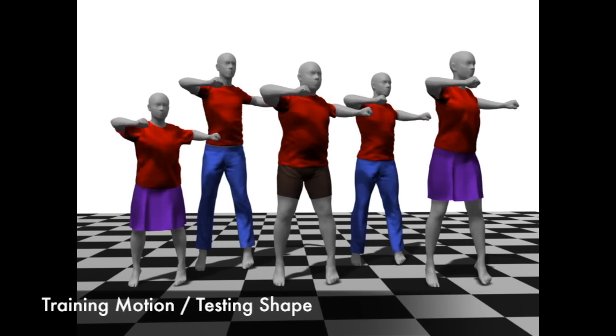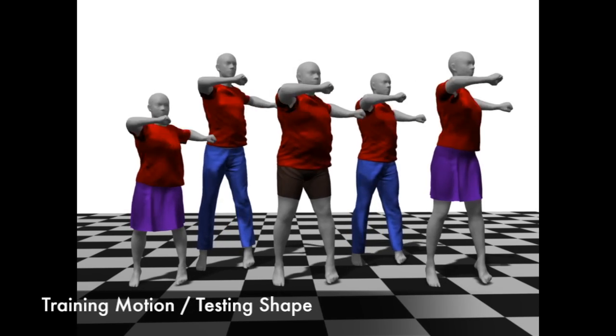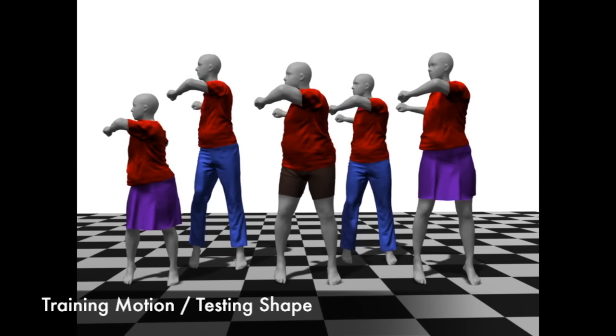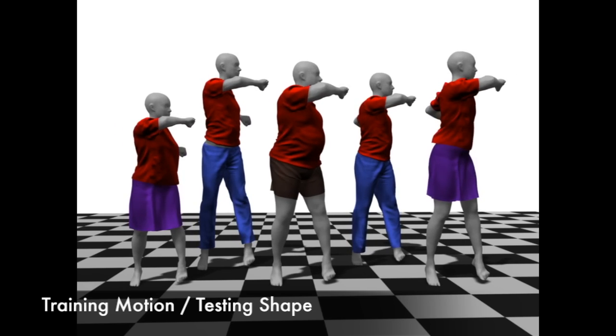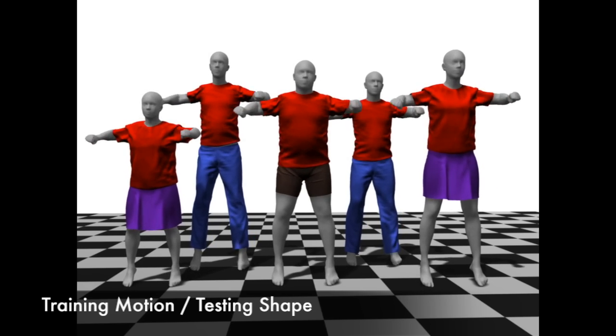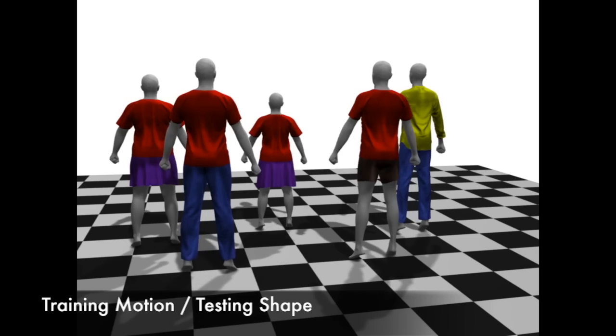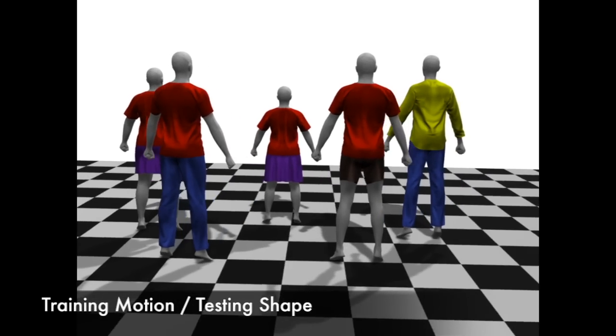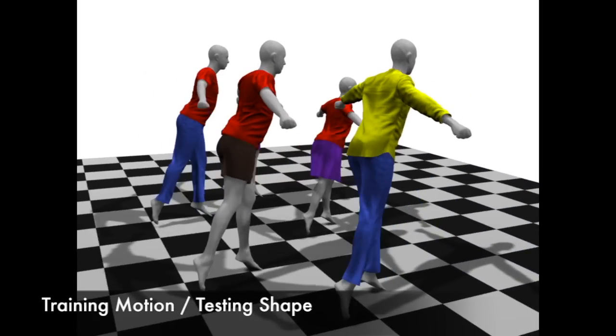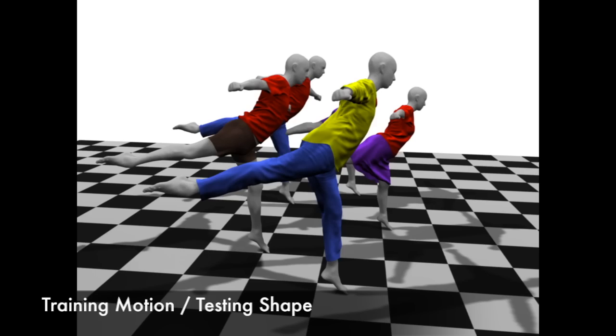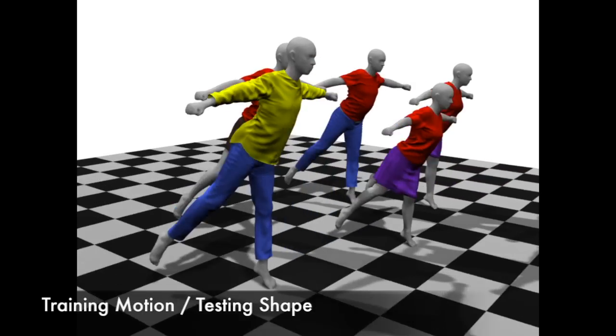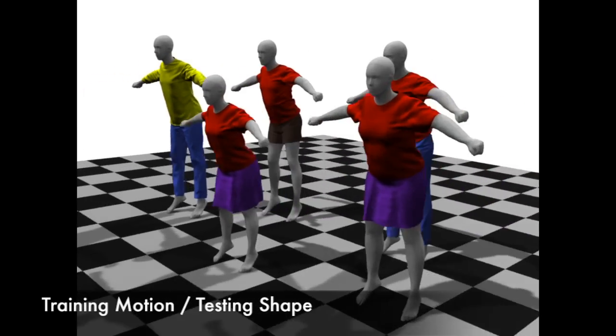We now show the drape animation for different body shapes and different motions. First, we show two motions that appear in the pose training set. Recall, however, that none of these body shapes were used in training the shape model. Observe how drape generalizes to dress a wide range of novel body shapes, even with fairly extreme poses of the arms and legs.